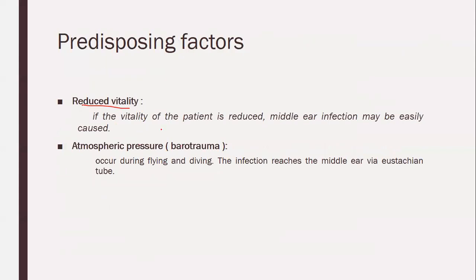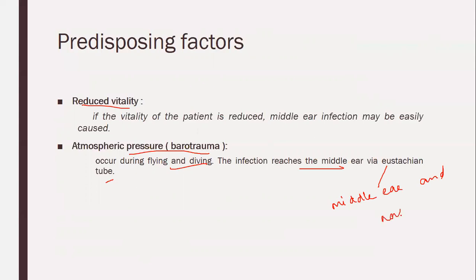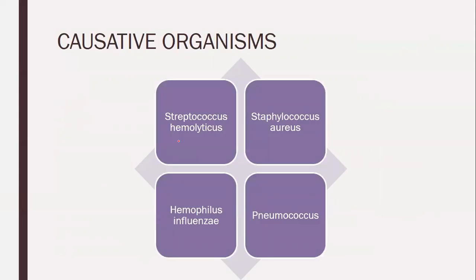Predisposing factors: First is reduced vitality, meaning the patient's immunity is reduced, so the patient will be more susceptible to infection. Atmospheric pressure changes — like barotrauma occurring during flying and driving — allow the infection to reach the middle ear via the Eustachian tube. The Eustachian tube maintains pressure between the middle ear and nasopharynx. Any changes in pressure variations can affect the Eustachian tube and cause injury, after which infections can occur.